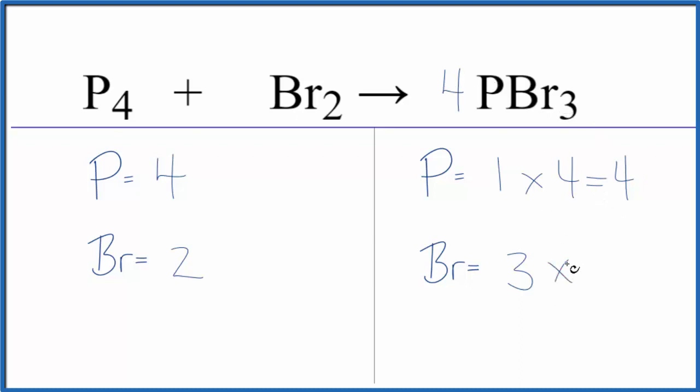Three times four, that gives us 12, and that's an even number. So since we have an even number here, it's going to be easy to fix these bromines because we just put a six, two times six, that'll give us 12, and we're done.